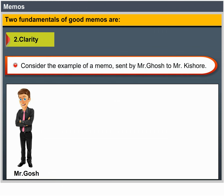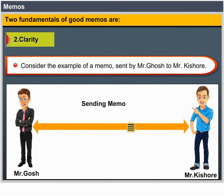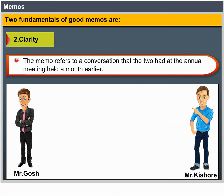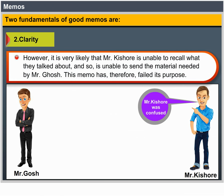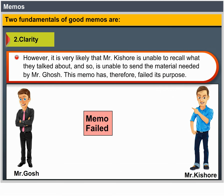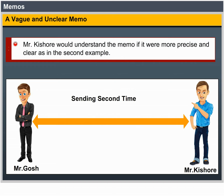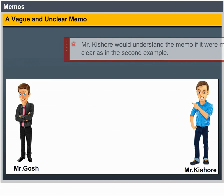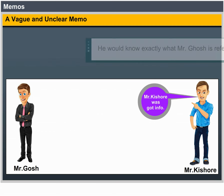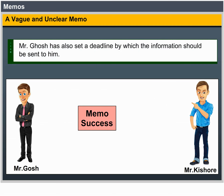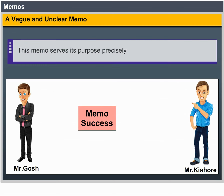Consider the example of a memo sent by Mr. Ghosh to Mr. Kisho. The memo refers to a conversation that the two had at the annual meeting held a month earlier. However, it is very likely that Mr. Kisho will be unable to recall what they talked about and so will not be able to send the material Mr. Ghosh wants. This memo has therefore failed in its purpose — a vague and unclear memo. Mr. Kisho would understand the memo if it were more precise and clear. He would know exactly what Mr. Ghosh is referring to, and Mr. Ghosh has also set a deadline by which the information should be sent. This memo serves its purpose precisely.